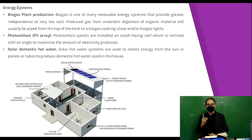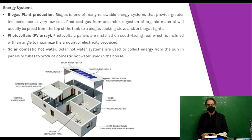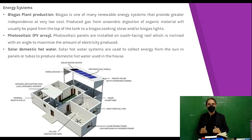Photovoltaic (PV) panels are installed on south-facing roofs inclined at an angle to maximize the amount of electricity produced. Solar hot water systems are used to collect energy from the sun through panels or tubes to produce domestic hot water used in the house.